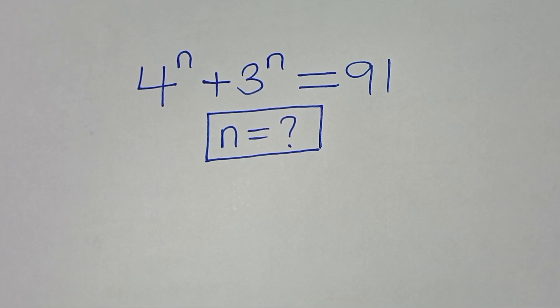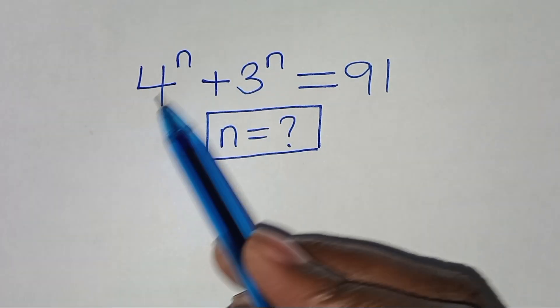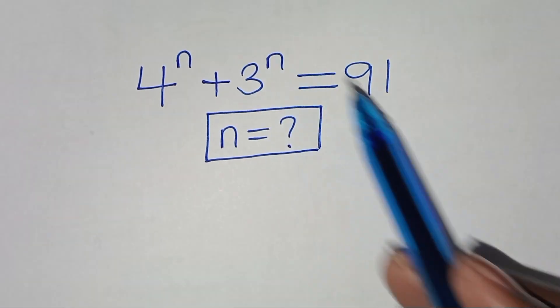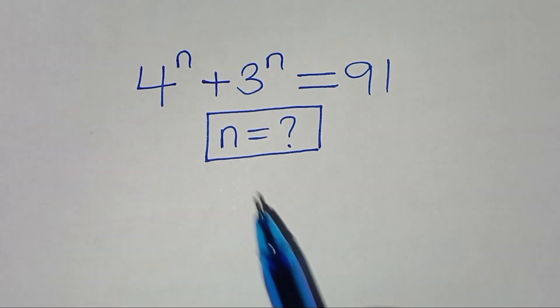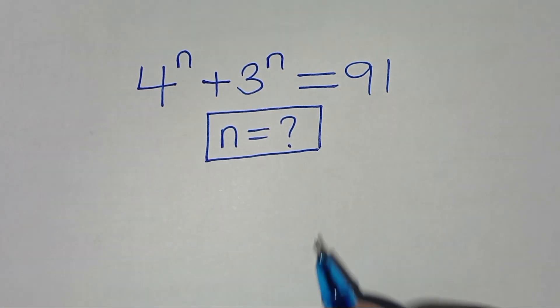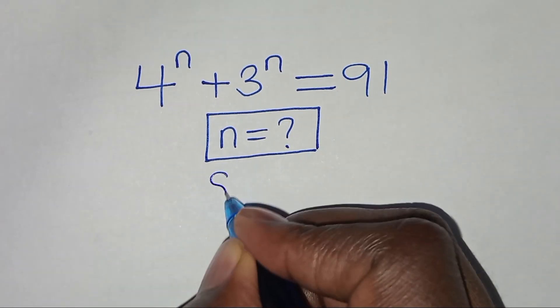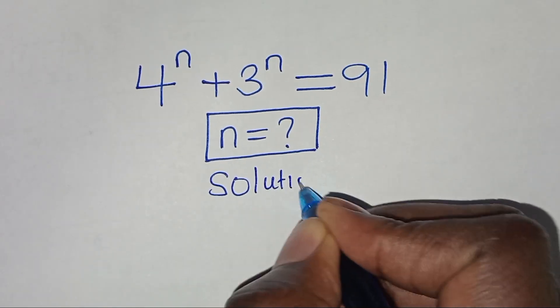Welcome everyone. We're going to solve this algebra problem: 4 to the power n plus 3 to the power n equals 91. What is the value of n? Let's present the solution from here.